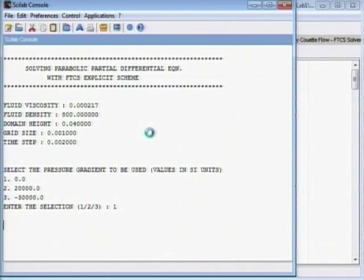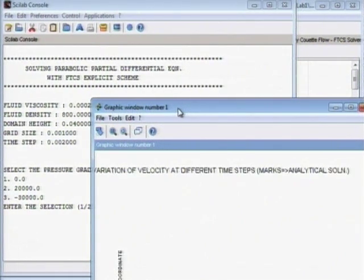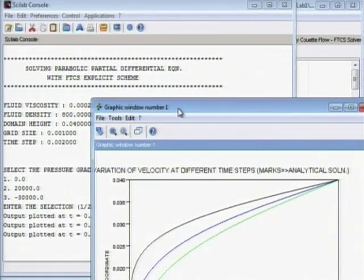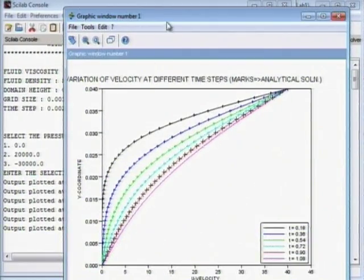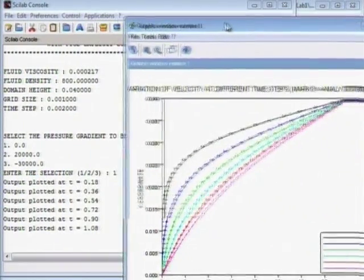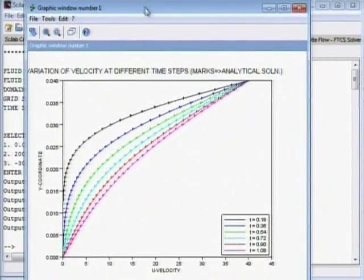In this case, it will take a pressure gradient of zero and generate the output. The output window pops up. It's dynamically plotting—you can see on the console it has been shown that output is plotted at different time steps, which correspond to the legend over here.